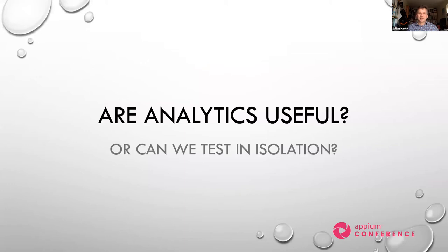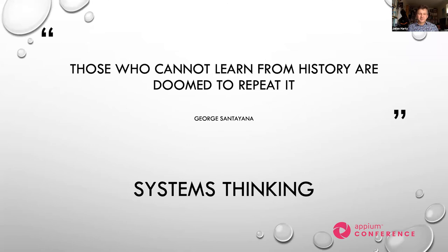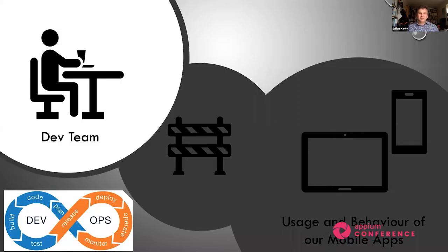The next question is: are analytics useful, or can we test in isolation? First, how do we measure our testing? Are we using internal metrics such as the number of tests we have, the tests we ran, the results of those tests, and the bugs we reported? But let's also think about external metrics — discussions with developers, how many of the bugs were accepted and fixed, discussions with customers or their representatives such as the customer service team, and even discussions with sample customers.